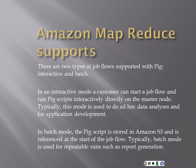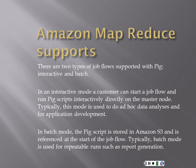There are two types of job flows. In interactive mode, a customer can start a job flow to run Pig scripts interactively directly on the master node — you do this for ad-hoc data analysis or application development. In batch mode, everything's stored in S3, your data is consistent like an Apache log, and you just let it do its parsing.